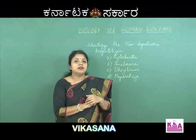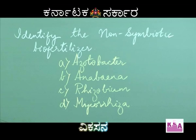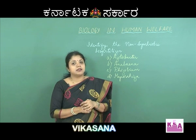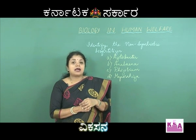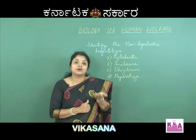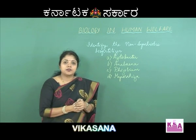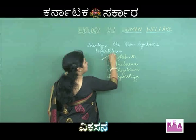Looking at the examples, Azotobacter is the only organism not in association with any other organism — it is a free-living organism that helps in nitrogen fixation, and thus can be considered a biofertilizer as it improves the fertility of the soil. So the right option here is option A, Azotobacter.